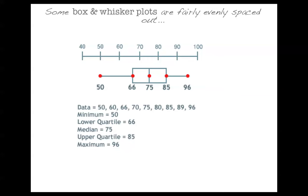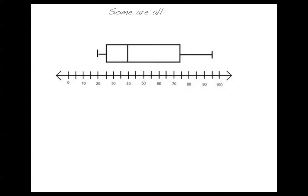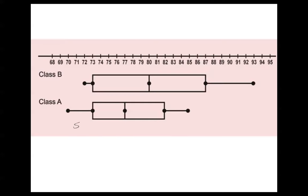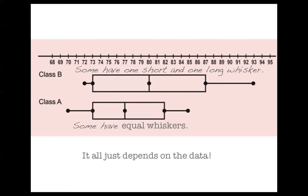Some box and whisker plots are fairly evenly spaced out. Some are all crazy, where the rectangle is kind of like, well, the middle of the rectangle isn't really in the middle. And the left whisker is shorter than the right whisker. Or some have equal whiskers. And some have one short, long, yeah, the whiskers can be different too. And it all just depends on what the data is that you start with. So you never really know how the box and whisker plot is going to come out until you start to take a look at the numbers.